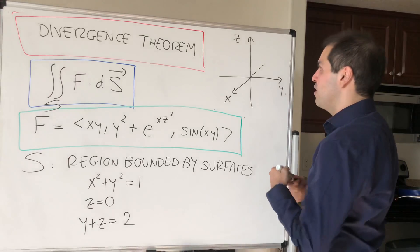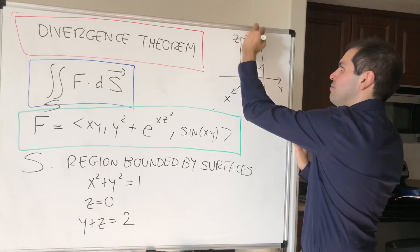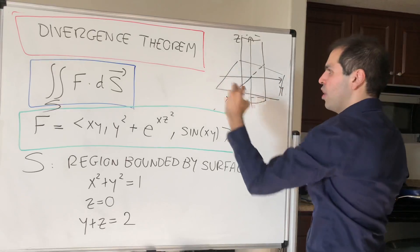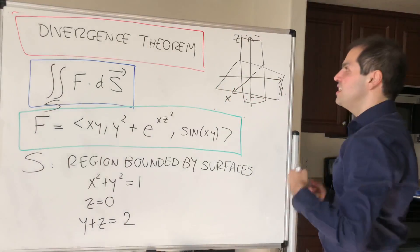First of all, the cylinder x squared plus y squared equals 1, the xy plane z equals 0, and lastly this plane y plus z equals 2.